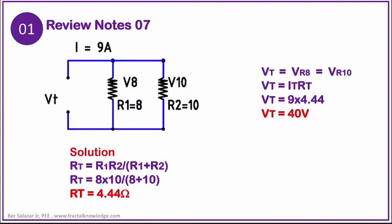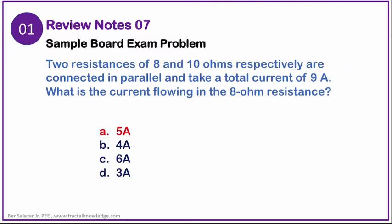Solving for the total voltage VT, it is equal to total current times the total resistance. That is 9 amperes times 4.44 ohms equals 40 volts. Since we know that the voltage total equals the voltage in the 8-ohm resistor, then solving for the current in 8-ohm resistor is equal to 40 volts divided by 8 ohms. The answer is 5 amperes. In our selection of choices, our correct answer is letter A, 5 amperes.